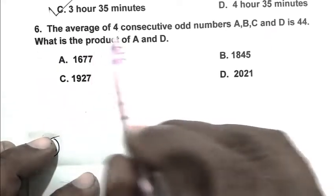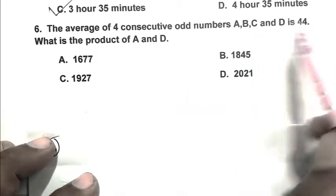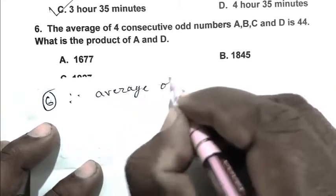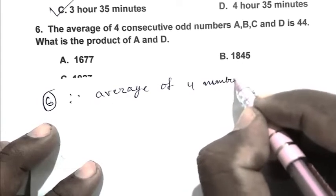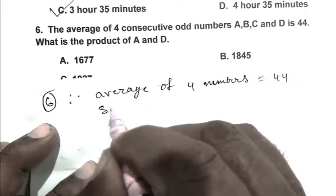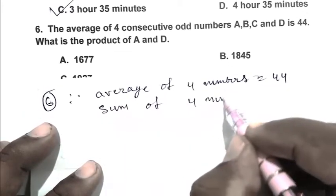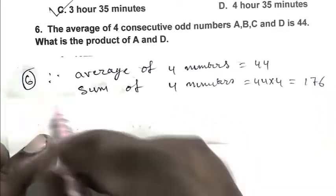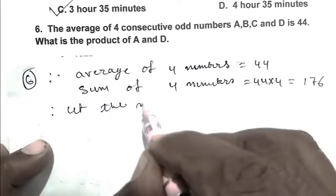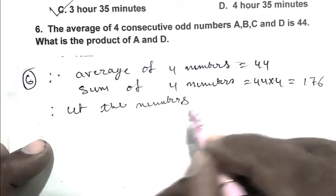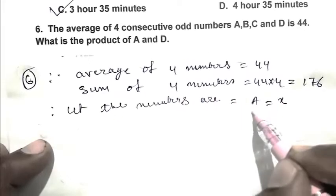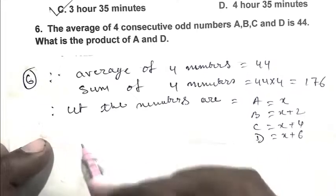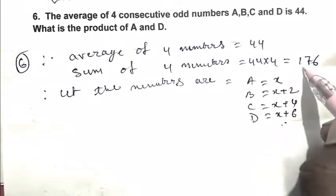Question number 6. The average of 4 consecutive odd numbers A, B, C and D is 44. What is the product of A and D? The average of 4 numbers is 44, so the sum of the 4 numbers is 44 multiplied by 4, that is 176. Let the numbers be A = X, B = X plus 2, C = X plus 4, and D = X plus 6.